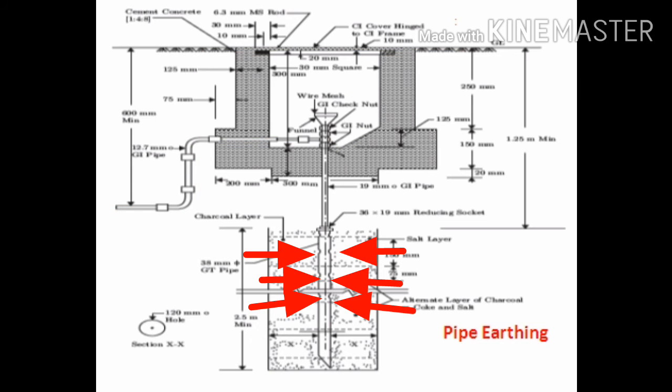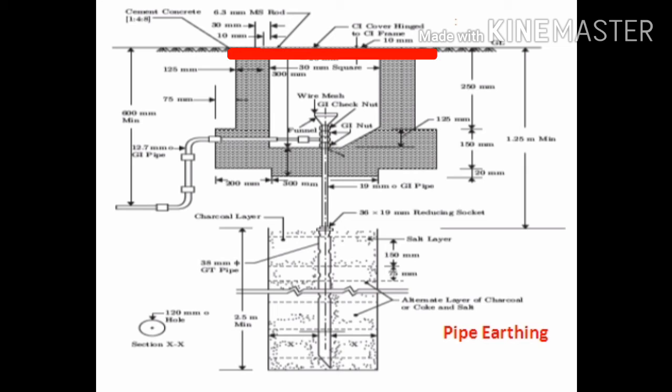The holes are drilled on the GI pipe of 38 millimeter that is buried inside the layers of charcoal and salt. Through these holes, the water poured into the funnel reaches the charcoal and salt layers. All the connections that are made in this type of earthing are by means of GI nuts and bolts in order to avoid rusting. The entire earthing system is covered by cast iron cover. The earthing wire runs up to the metallic casing of electrical load through a GI pipe.